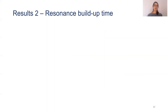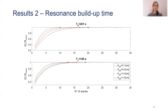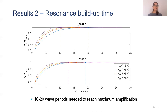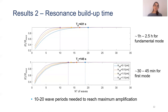Now we want to show our results for the non-stationary part of our time series, which we call the Resonant Build-Up Time. This refers to the number of waves resonance needs to reach maximum amplification. Here you can see the number of waves needed for different offshore wave heights to reach maximum amplification. On the upper panel you see the fundamental mode and the lower panel the first mode. What we found is that you need between 10 to 20 waves for both periods to reach maximum resonant amplification, which in terms of time means between one and two and a half hours for the fundamental mode, and between 30 to 45 minutes for the first mode.